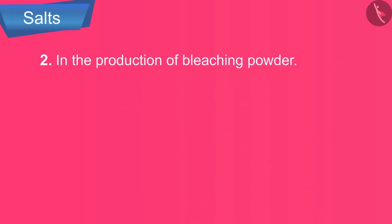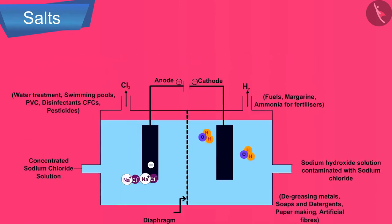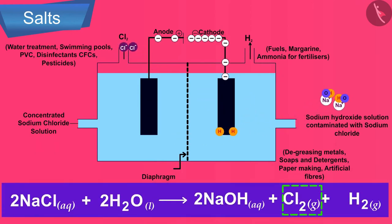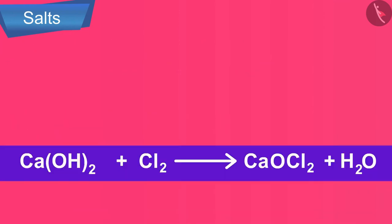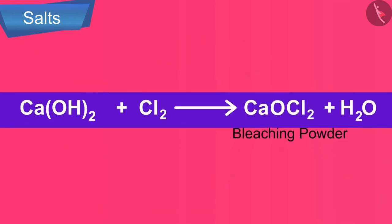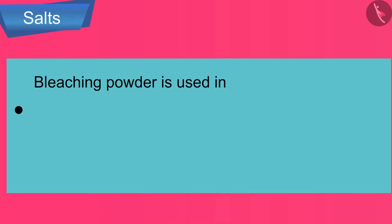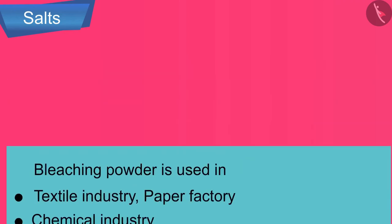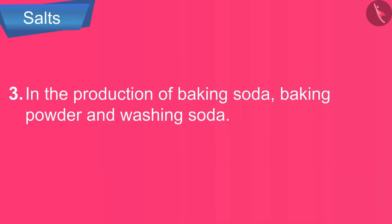In the production of bleaching powder, the electrolytic decomposition of sodium chloride produces chlorine gas, which is used in the production of bleaching powder. Bleaching powder is used in the textile industry, paper factory, chemical industry, and drinking water to get rid of bacteria. In the production of baking soda, baking powder, and washing soda.